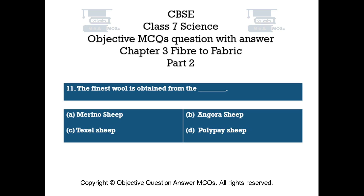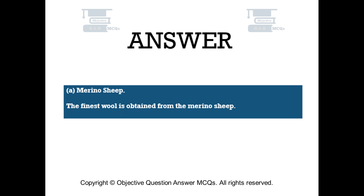Question number 11. The finest wool is obtained from the — Option A: Merino sheep. Option B: Angora sheep. Option C: Texel sheep. Option D: Polype sheep. The right answer is Option A — Merino sheep. The finest wool is obtained from the Merino sheep.